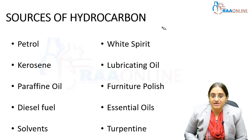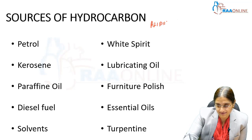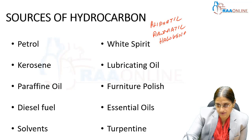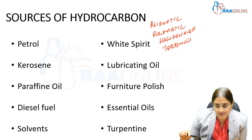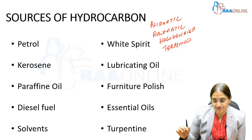Sources of hydrocarbon can be categorized into 4 groups: aliphatic, aromatic, halogenated, and terpenes. The aliphatic group includes petrol, kerosene, and diesel fuel. The aromatic group includes solvents, nail polishes, and white spirit. Halogenated are usually seen in refrigeration solutions. Terpenes include turpentine.